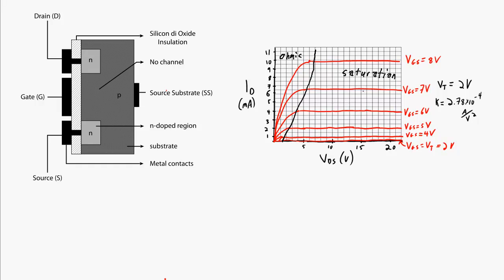This is very similar to the depletion MOSFET as well as to the JFET. The difference is that the gate-source voltage threshold is now a positive threshold voltage. So we increase the gate-source voltage from zero up to a threshold to create the channel, and once we get above that threshold, any application of a drain-source voltage will allow current to flow — either in the ohmic region (approximately linear) or the saturation region (no change in drain current for changing VDS).